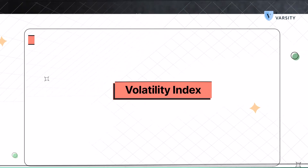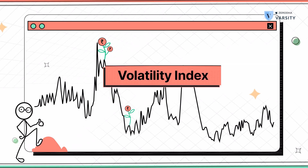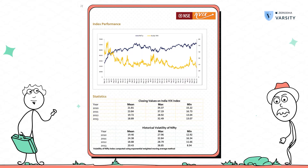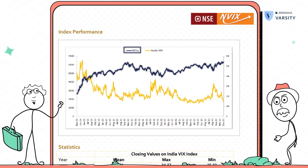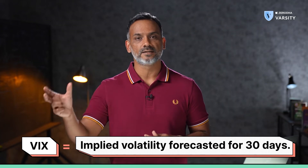Let's move ahead to discuss one last thing before we conclude: the volatility index, or the VIX index. Here is NSE's fact sheet on India VIX. VIX is developed using Nifty option prices and gives us a measure of what the volatility is likely to be over the next 30 days. In a sense, this is the overall market's expectation of what the volatility is likely to be — in other words, this is implied volatility forecasted for the next 30 days.